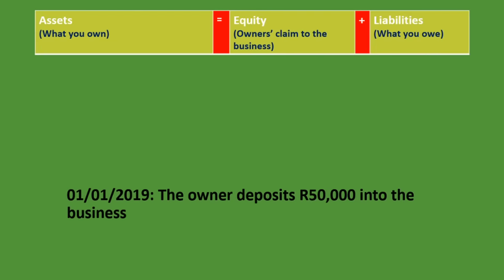The first transaction tells us that the owner deposits 50,000 rand into the business. The two accounts involved are bank, because money is coming into the business, and capital, because the owner is investing in the business. Bank is an asset, and capital goes under equity. We have a separate lesson explaining these classifications if needed.